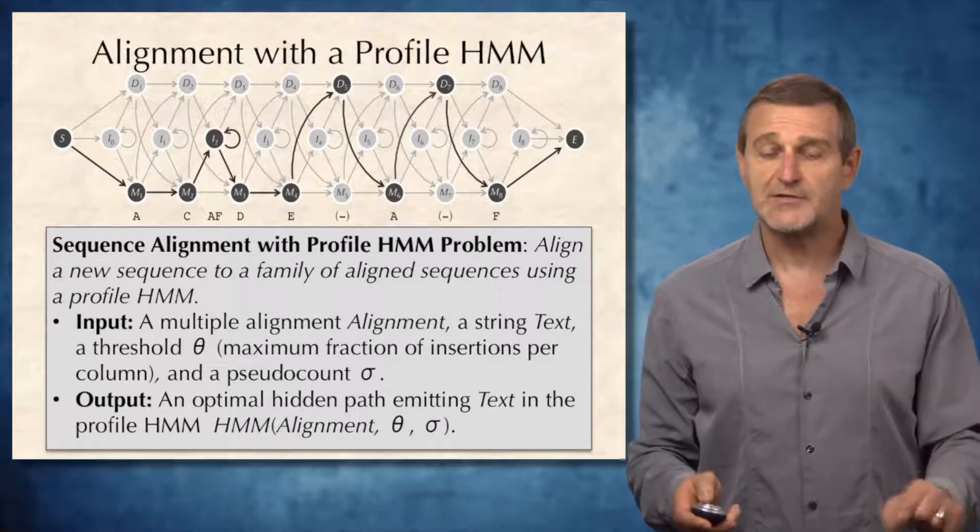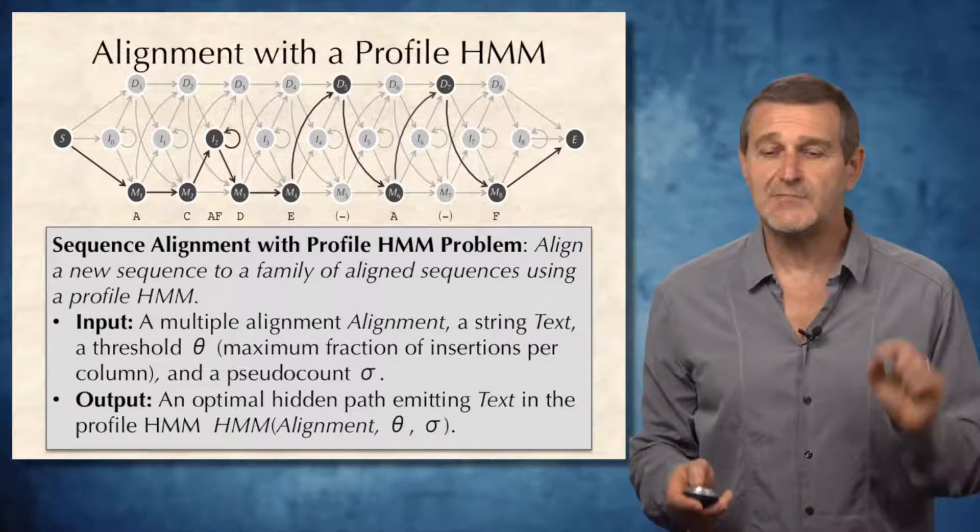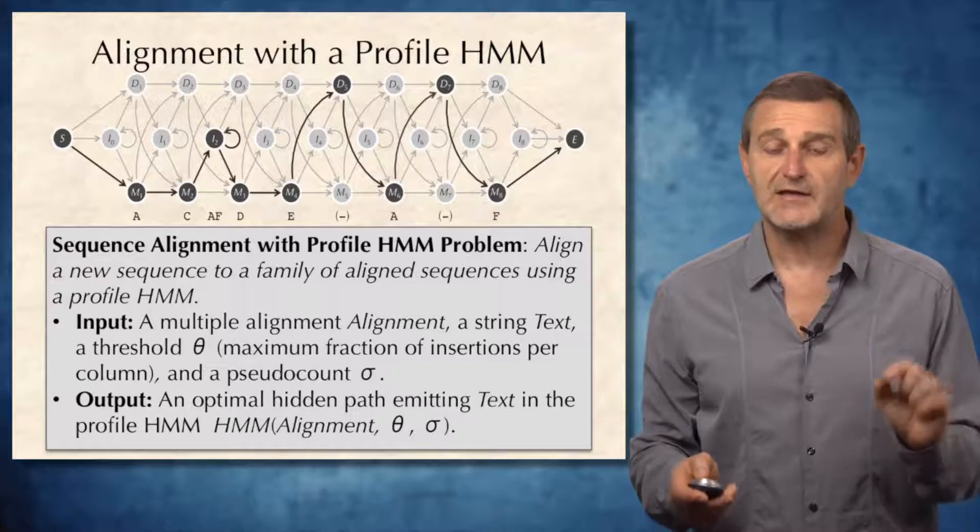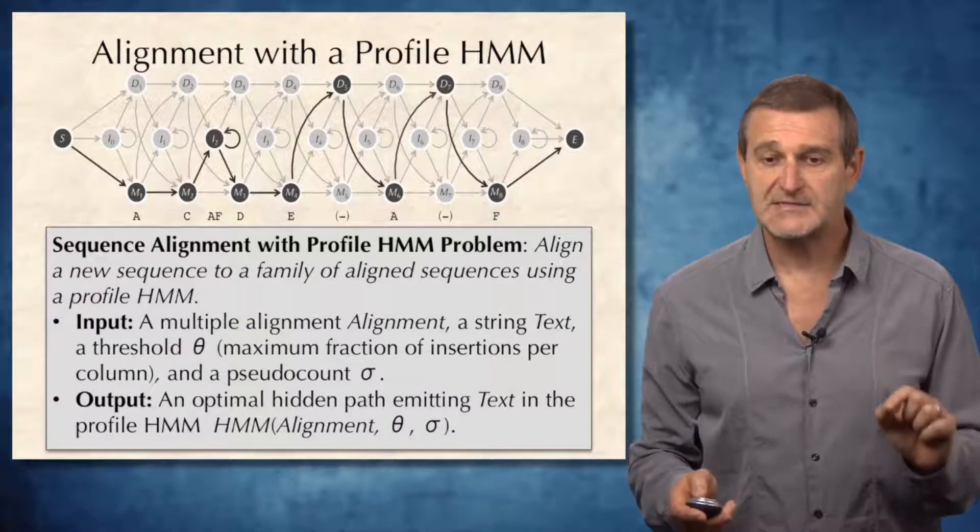and a pseudocount σ. The output is an optimal hidden path emitting text in the profile HMM, denoted HMM alignment (θ, σ).